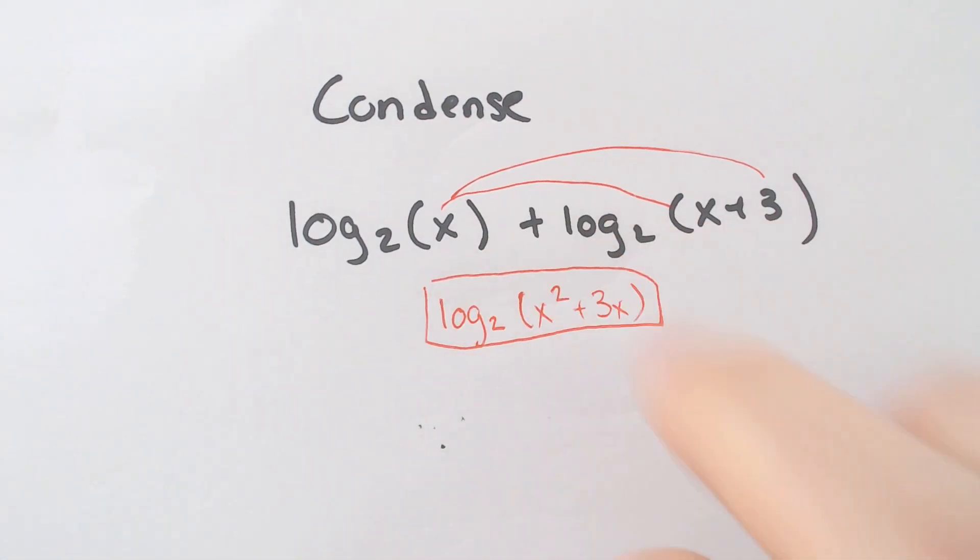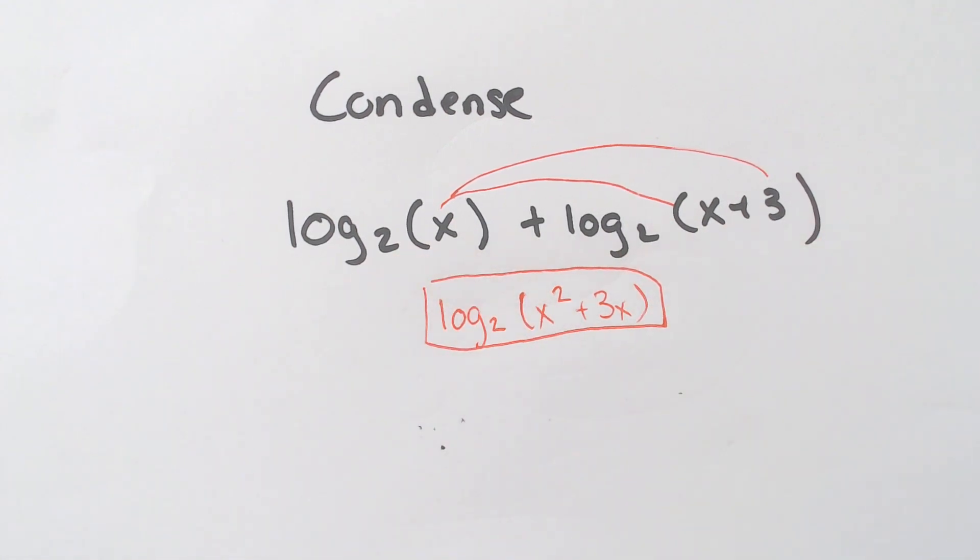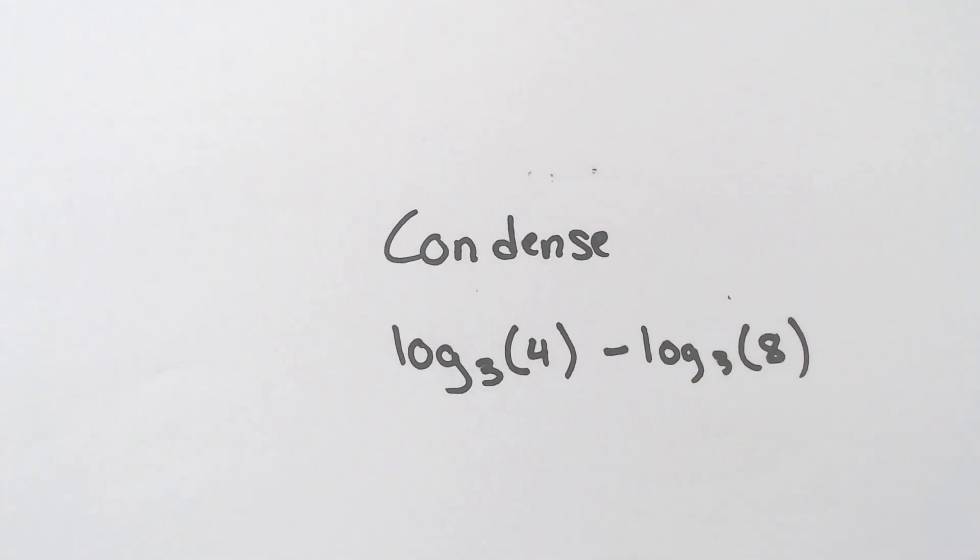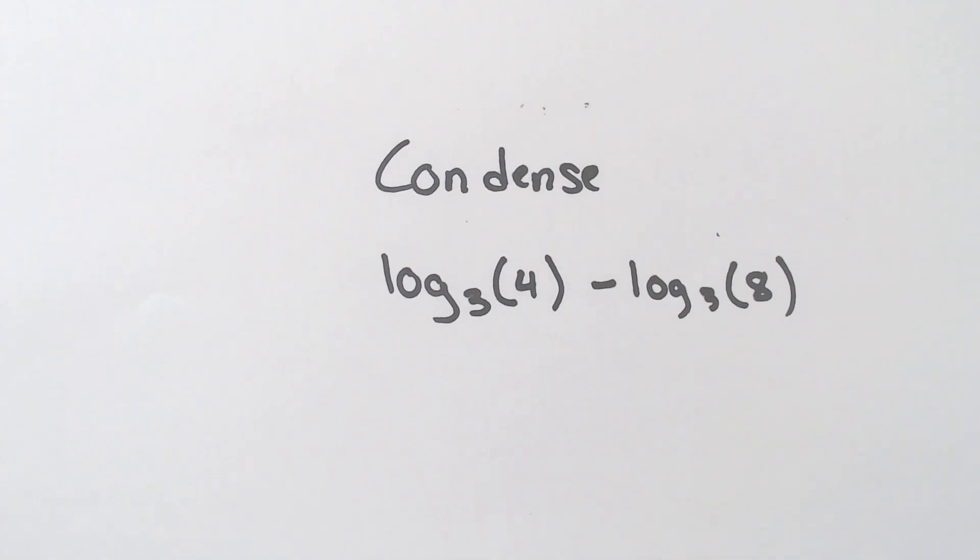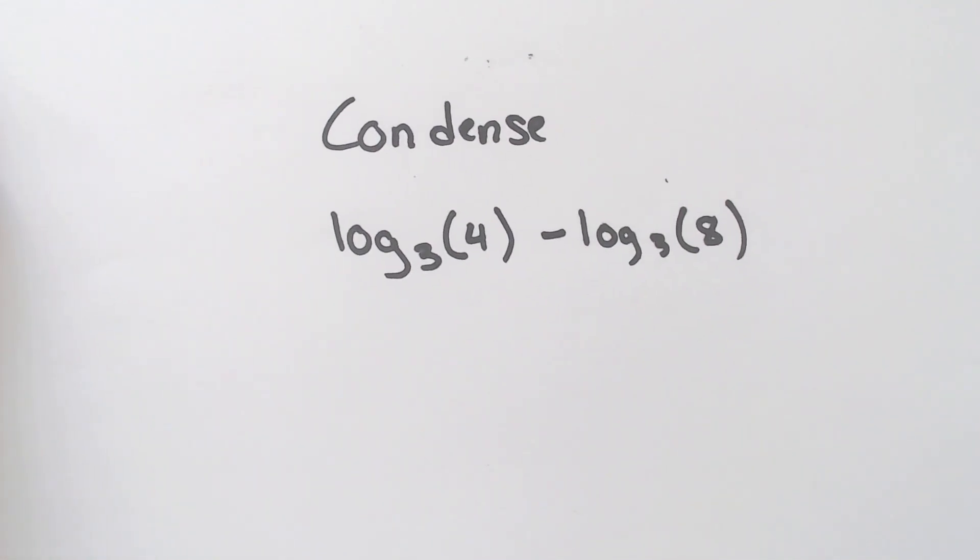So if there's a plus in between, you multiply. If there is a minus in between, that would mean that you would not multiply, but divide.